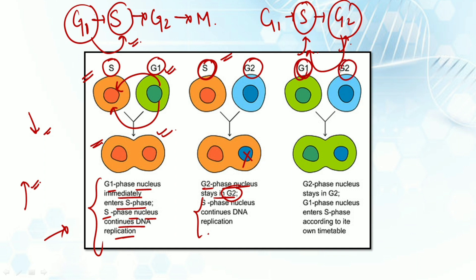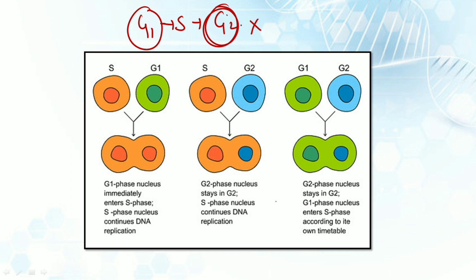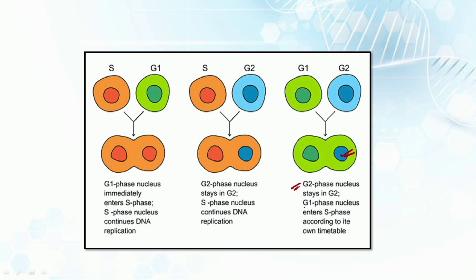The third case is when G1 and G2 were fused. In this case also there is no reversion or forward movement — G2 stays in G2 itself, and G1 would enter into the S phase according to its normal timing. There is no effect of G2 over G1; G1 would continue to perform its normal functions.